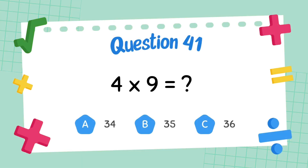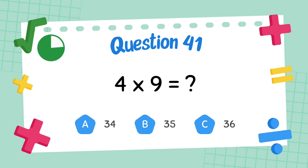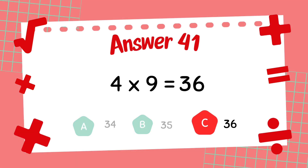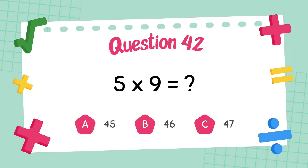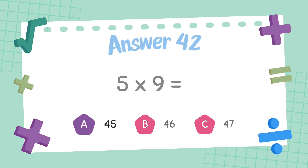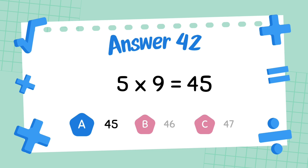What is 4 x 9? The answer is 36. What is 5 multiply 9? The answer is 45.